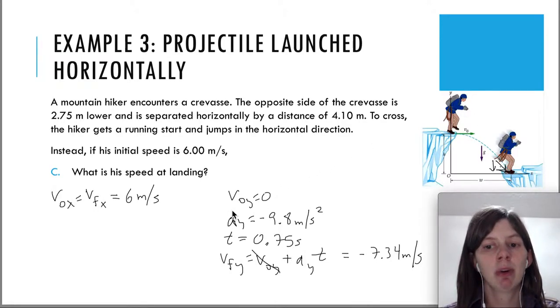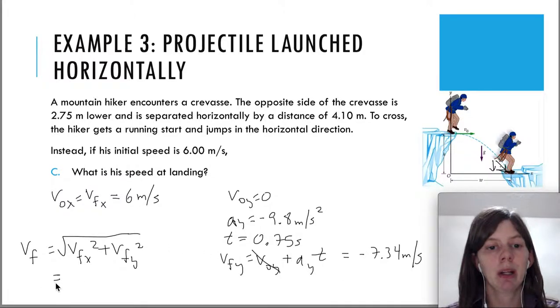And now we have one more final step. We're done separating the x and y directions. But now we have to find v-f. Using the Pythagorean theorem, v-f is going to be equal to the square root of v-f-x squared, plus v-f-y squared. So let's plug in the 6 squared, plus negative 7.34 squared. Remember or be careful that the negative does get squared here. And what we're going to end up with is 9.48 meters per second. Since we're just looking for the speed, we don't have to worry about the direction.